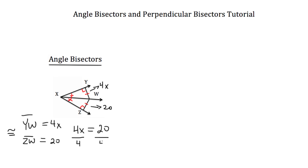So we'll divide both sides by 4 to get the X alone on the left hand side. And we'll get X is equal to 5. If you pause the video now, you could plug that value in for X and check your work to find out that both segments YW and ZW are equal to 20.